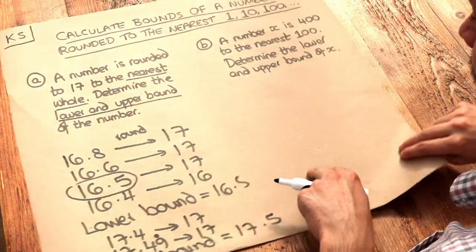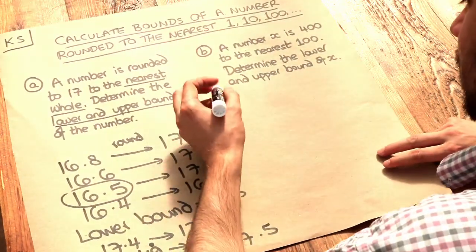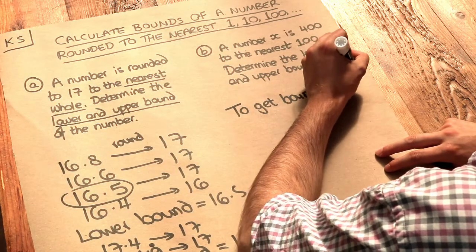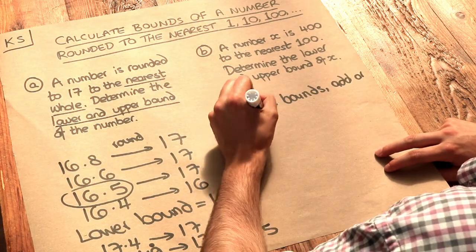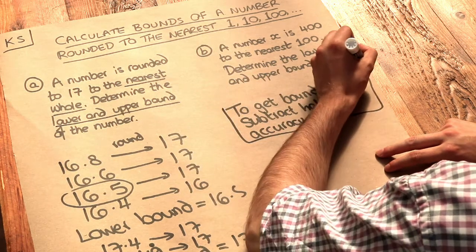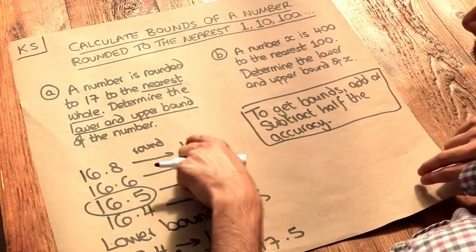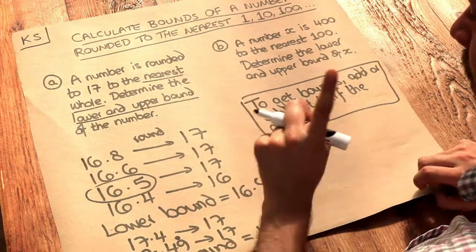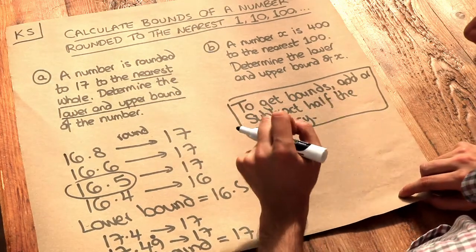Now there's a quick way of doing this. And it's this. To get the bounds, we add or subtract half the accuracy. Now what I mean by this is that, well, the accuracy here is to the nearest whole. So the accuracy was 1, a whole. And if we half that, we get 0.5.